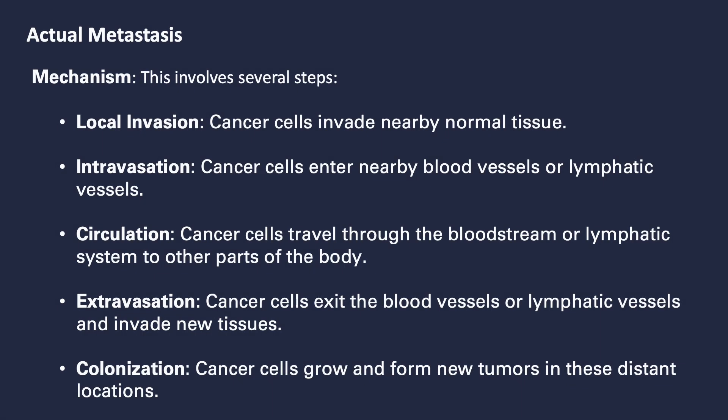The mechanism of actual metastasis involves several crucial steps. First, there's local invasion, where cancer cells penetrate the surrounding normal tissue. Next, during intravasation, these cells enter nearby blood vessels or lymphatic vessels. They then circulate through the bloodstream or lymphatic system, reaching distant parts of the body. In extravasation, the cancer cells exit these vessels and invade new tissues. Finally, colonization occurs, where the cells grow and form new tumors in these distant locations. Each step is vital for the spread of cancer and presents potential targets for therapeutic intervention.